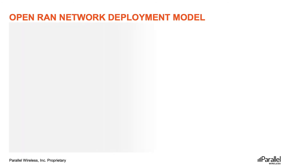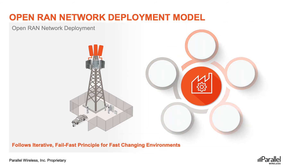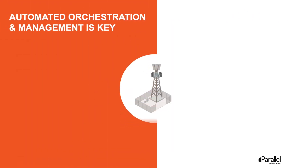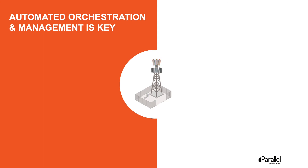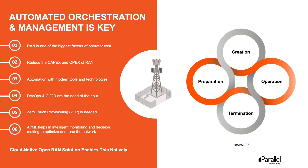Cloud-native Open RAN enables an iterative fail-fast principle, essential for a fast-changing environment. Network deployment can be driven by business needs, which trigger a feedback loop going through plan and design, build network, monitor and operate, and evaluate — which in turn feeds back into business needs. Orchestration and management are key to achieving these benefits. Automation with modern tools and technologies brings several advantages across the different stages of network deployment: preparation, creation, operation and monitoring, and termination.